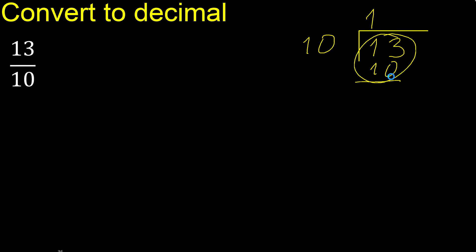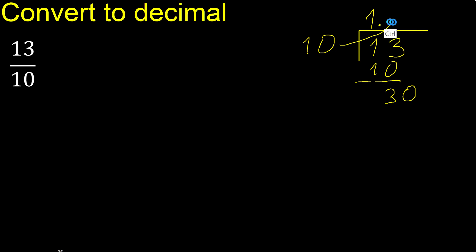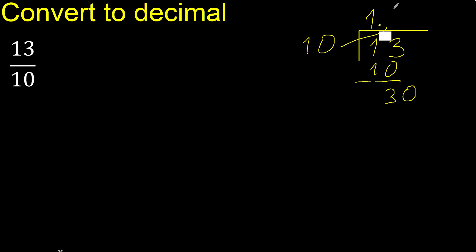Subtract: remainder is 3. There is no number that goes down, so complete with 0 — bring down, giving 30. Decimal point here. 10 multiplied by which number is nearest to 30? 10 multiplied by 3 is exact. Subtract: 0. Therefore, finish.